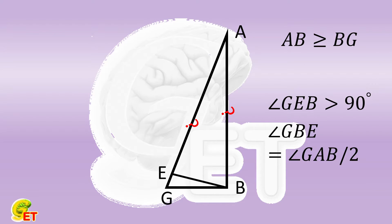But in the right triangle ABG, as AB is not shorter than BG, the angle EGB cannot be smaller than the angle GAB. Then the two acute angles GBE and EGB cannot be equal to each other, so the triangle BGE cannot be an isosceles triangle.